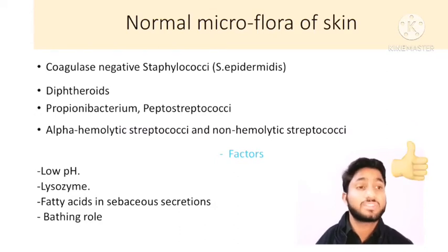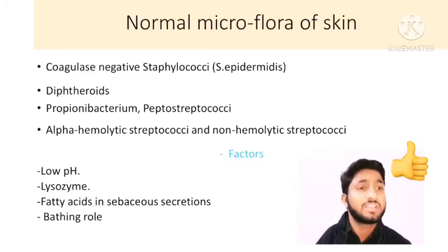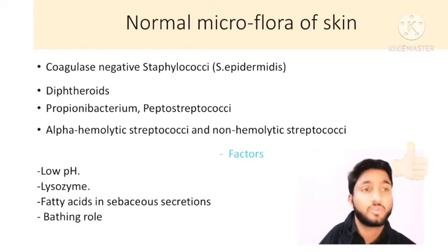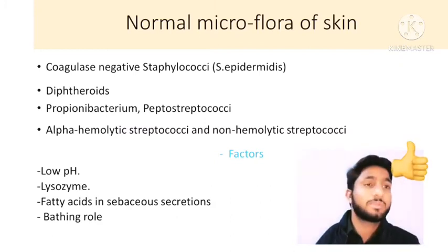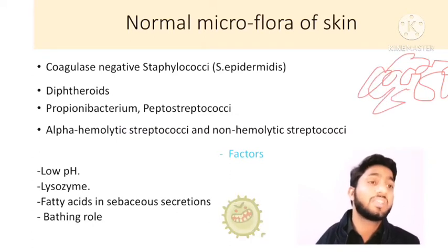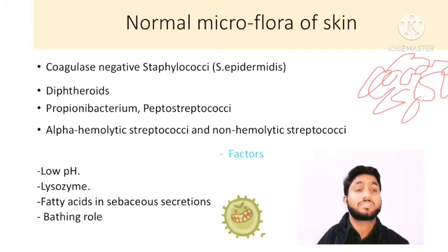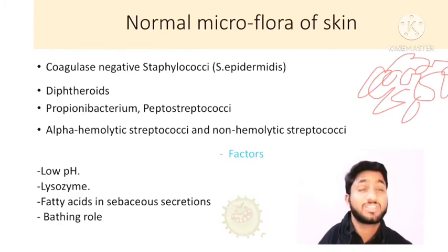Now we will discuss the most important one: normal microbiota of the skin. The most important microorganisms present upon our skin include coagulase-negative Staphylococcus, Staphylococcus epidermidis, and Staphylococcus aureus. Staphylococcus are round-shaped bacteria that exist in clusters, like bunches. Staphylococcus aureus can cause infection, while others play a beneficial role on the skin.